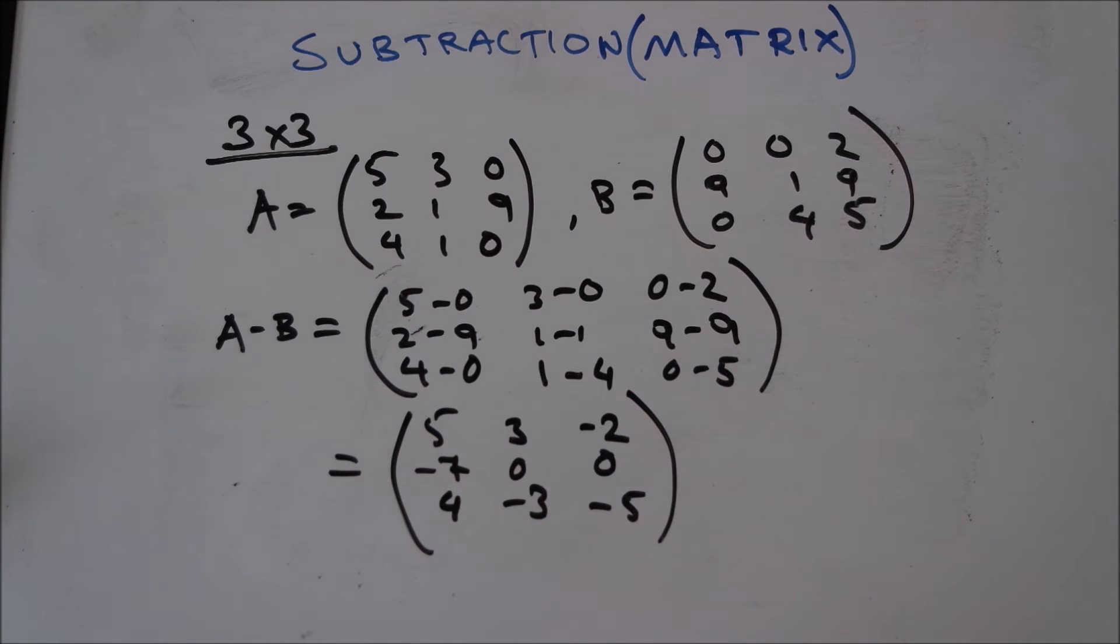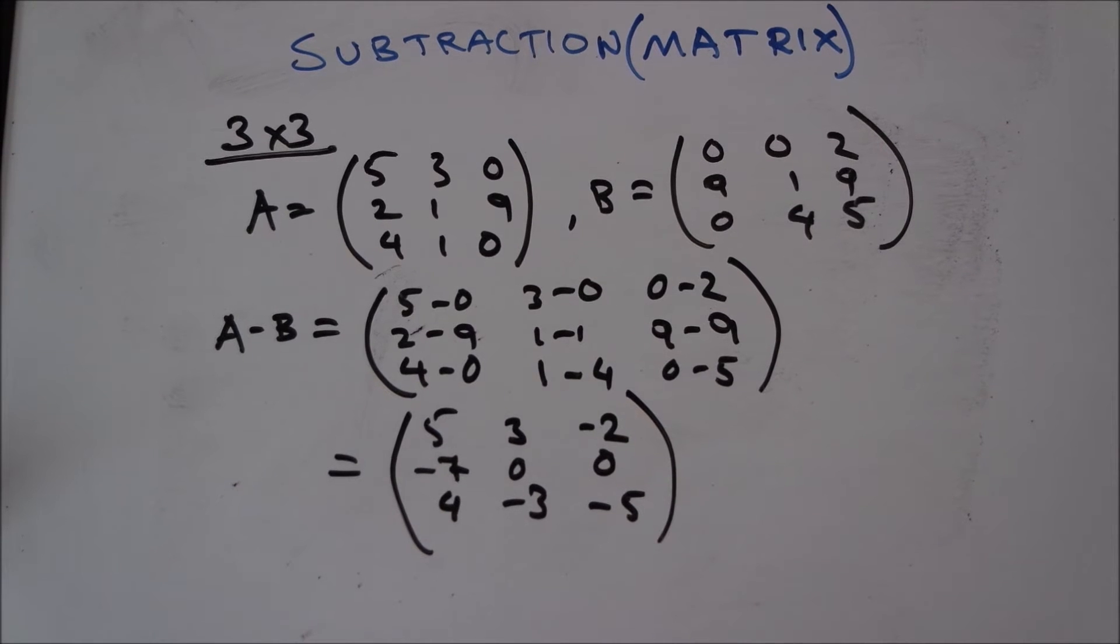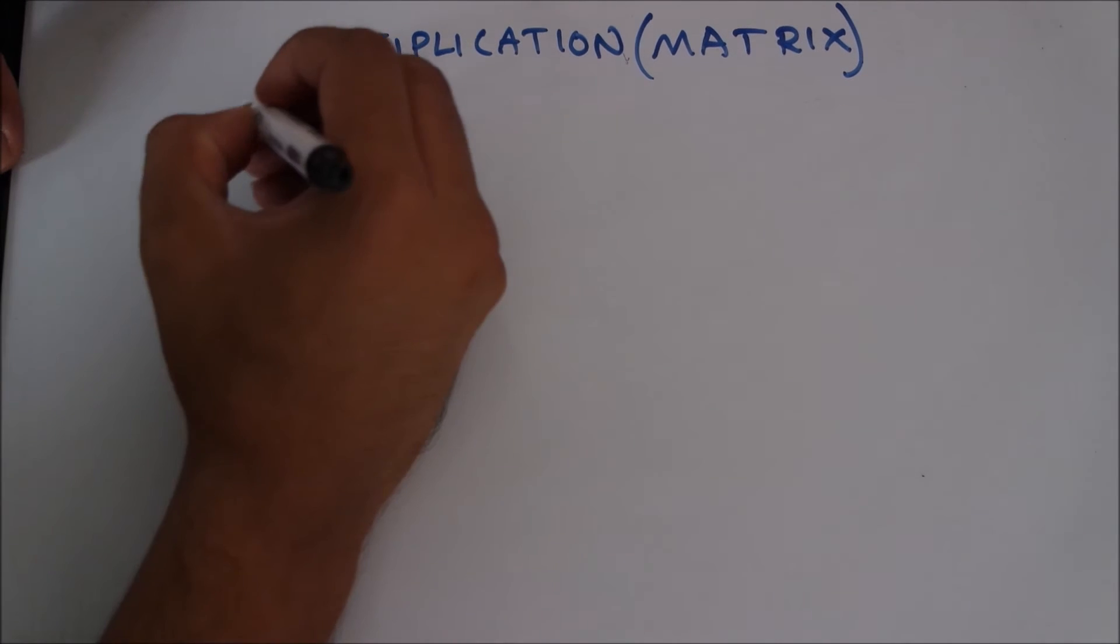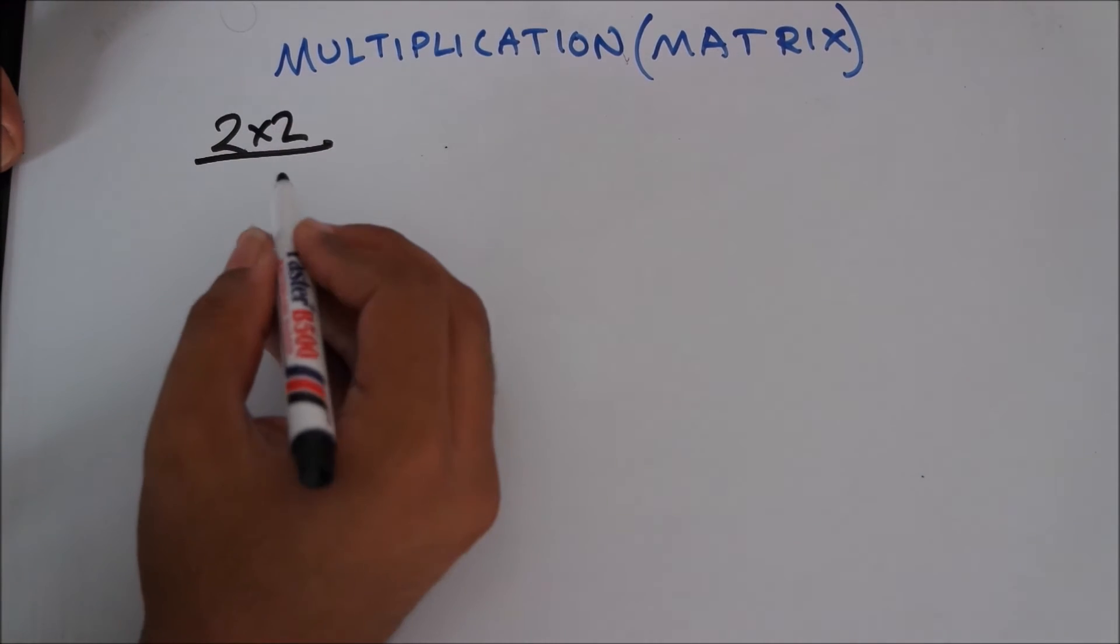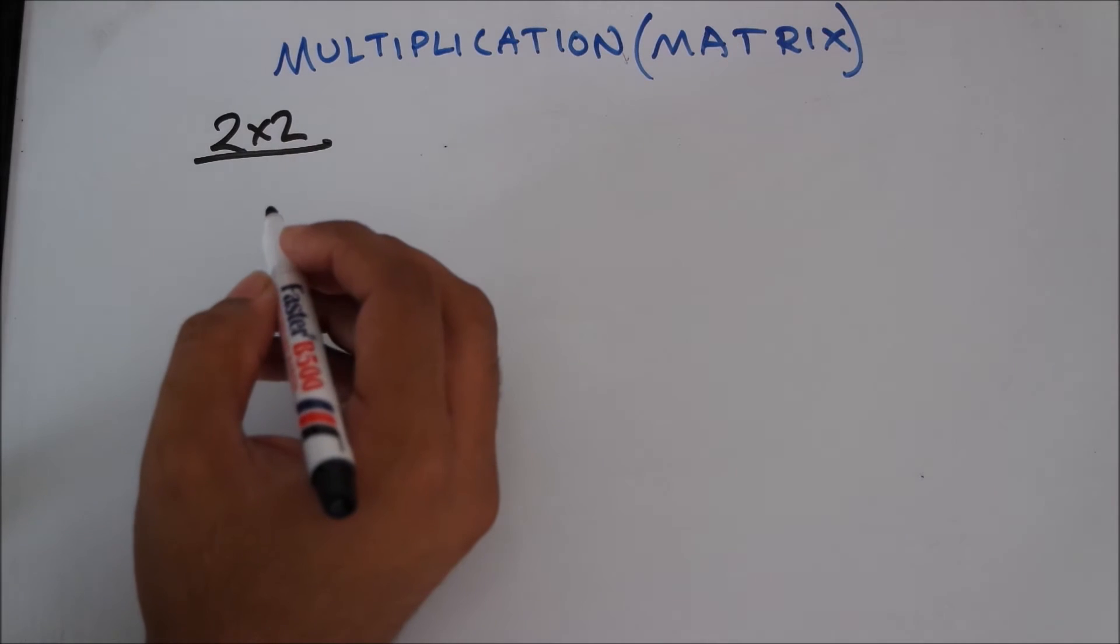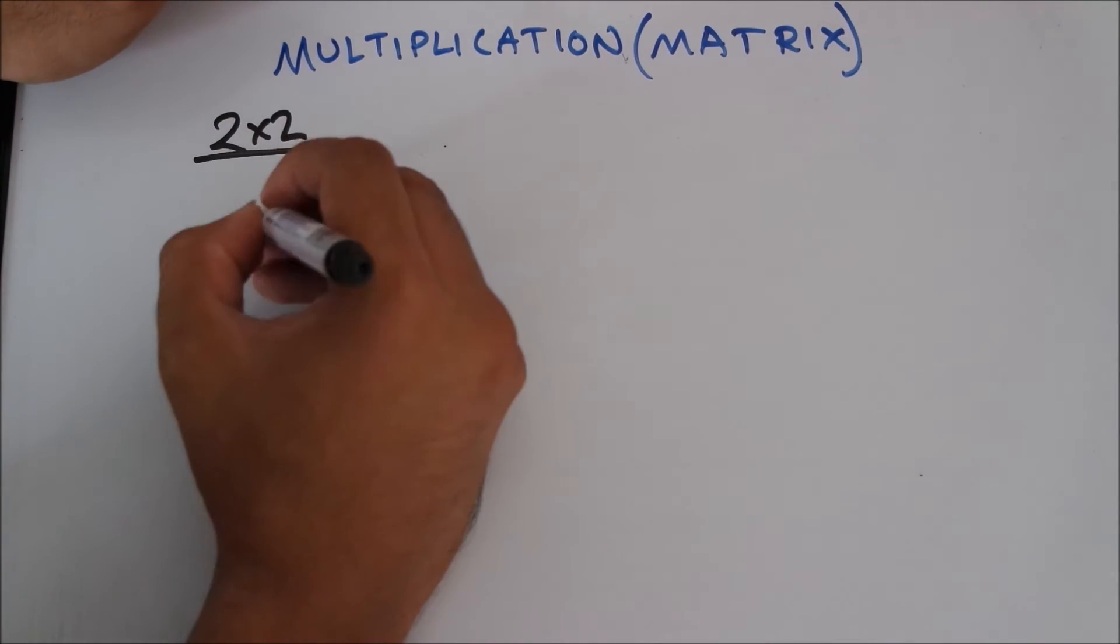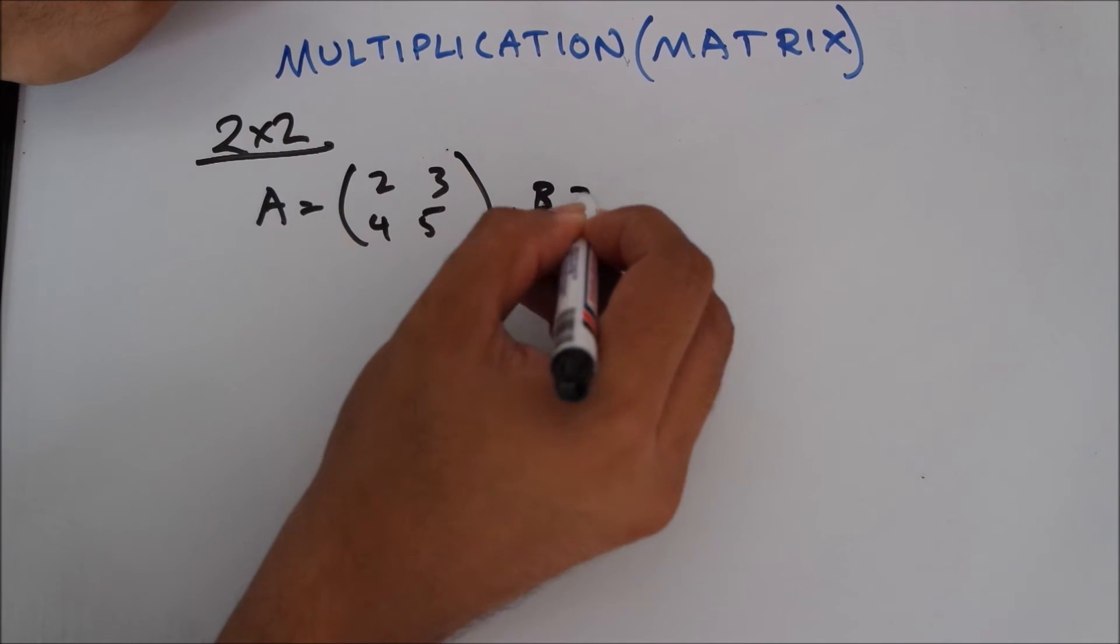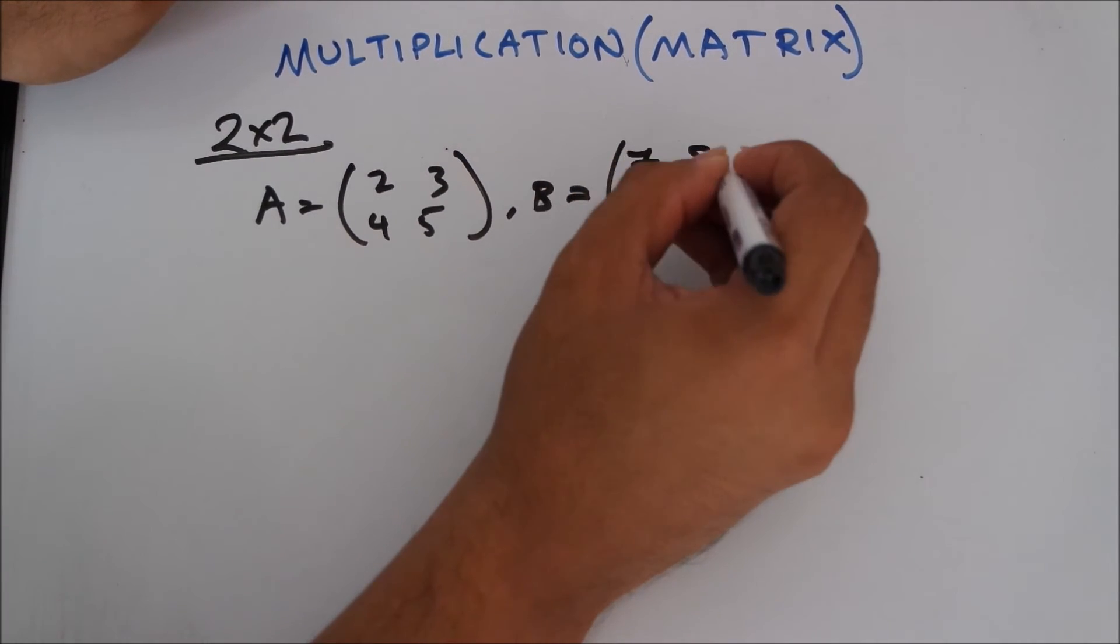And this is going to be a bit tricky, but if you practice, it's going to be very easy for you. I have planned to show you the 3 into 3 multiplication of matrix, but I figured that starting off with the 2 by 2 matrix would be a better option. Let's say you have A equals 2, 3, 4, 5 and B equals 7, 8, 9, 0.